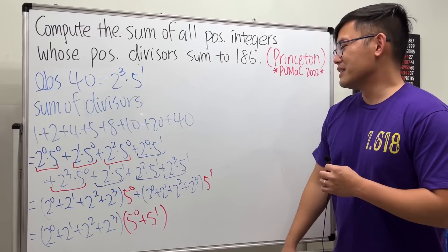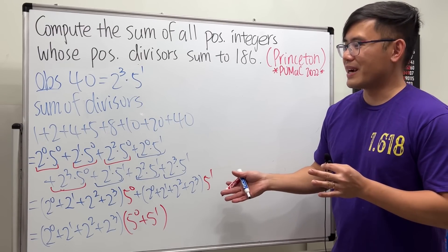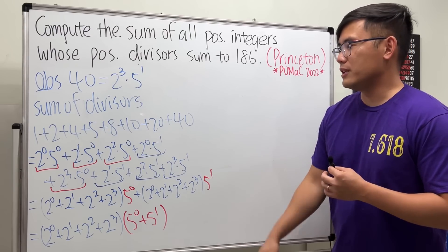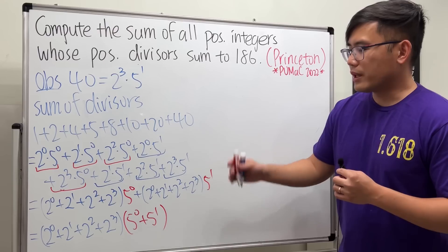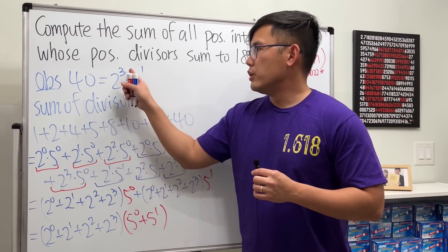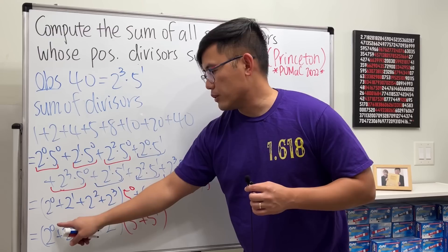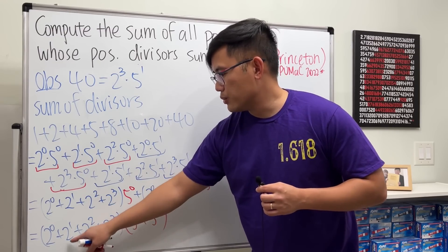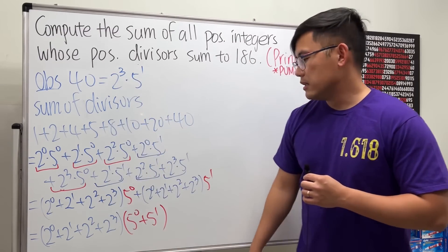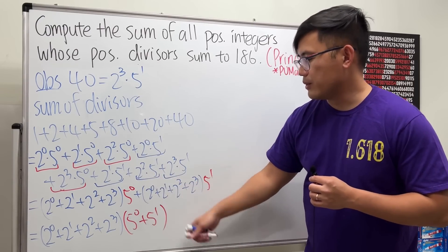I chose 40 because it's not too hard to work out but still gives useful insight. The pattern is: if we have a prime 2 to the power 3, we sum 2⁰ + 2¹ + 2² + 2³. Same thing for 5: we get 5⁰ + 5¹.